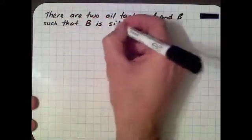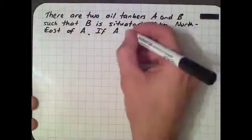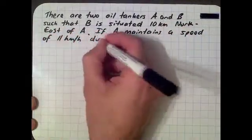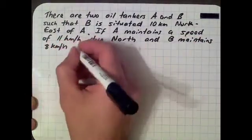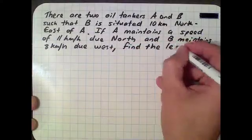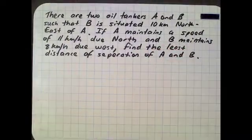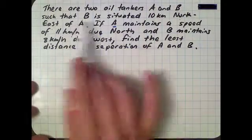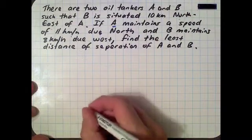Let's look at the second example. There are two oil tankers, A and B, such that B is situated 10 kilometers northeast of A. A maintains a speed of 11 kilometers per hour due north, and B maintains a speed of 8 kilometers per hour due west. We need to find the least distance of separation of A and B - the smallest distance between the two oil tankers. Let's look at drawing a diagram.